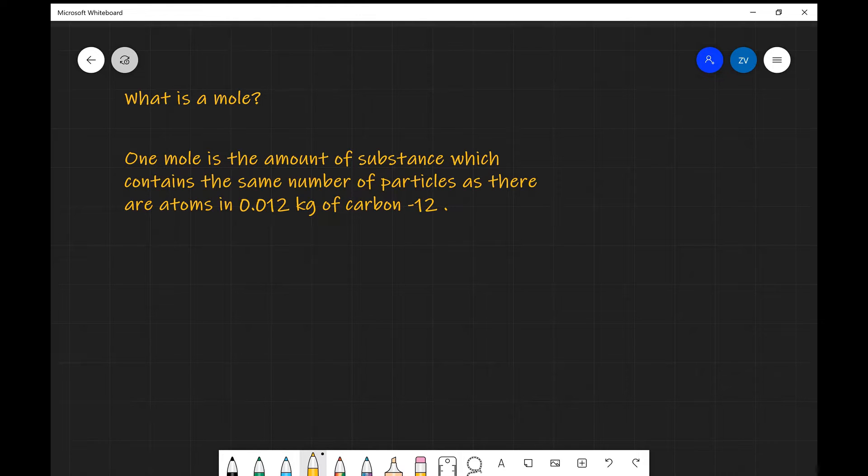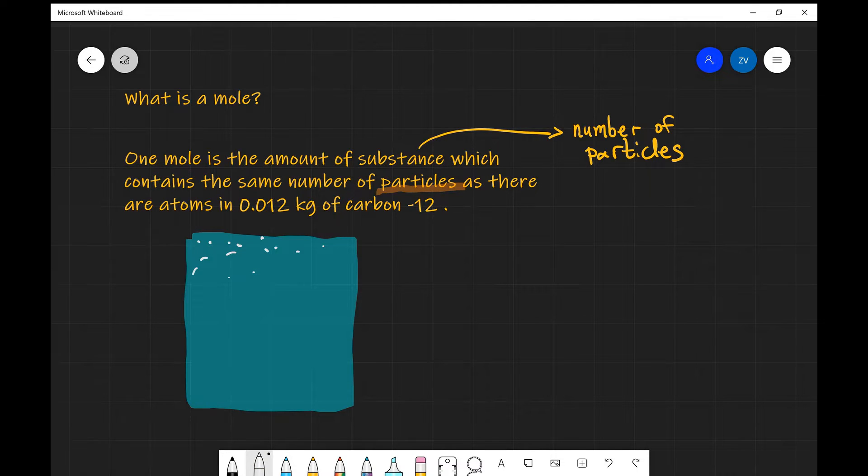In this case, the amount of substance simply means the number of particles. It's also important to specify that in this case, particles could mean both atoms or molecules depending on the individual case. This is quite a complicated definition. Let's see if we can understand what this actually means if we look at this in a slightly more simple way.